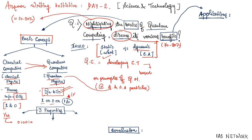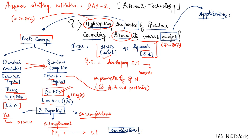This property — where a quantum computer can behave as both 1 and 0 in its quantum state — is called superimposition. Another property is entanglement. In entanglement, if there are two particles separated by any distance, and particle one shows an upward trend, particle two will also show an upward trend. Similarly, if particle one shows a downward trend, particle two will also show a downward trend — this happens when both particles are entangled with each other.